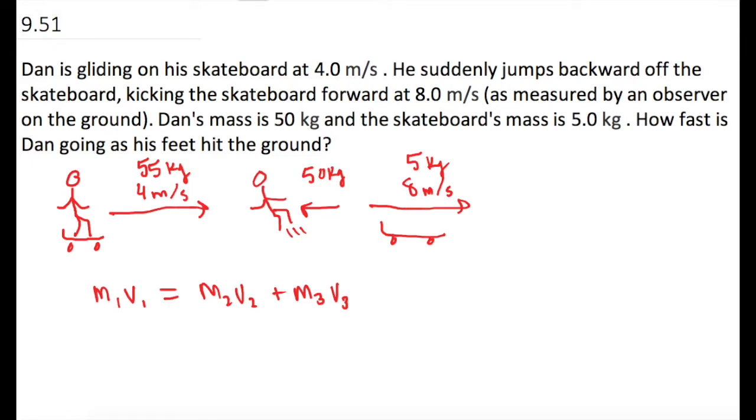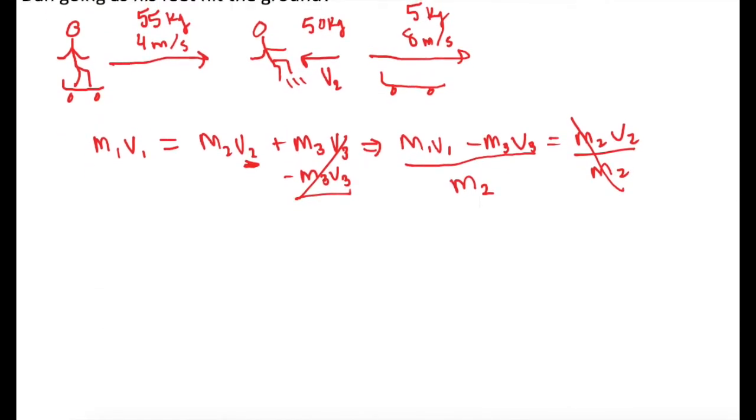And they tell us how fast is Dan going when he hits the ground. So we want this guy. So we want V2. So now let's go ahead and isolate V2. So we'll subtract over M3V3. So we have M1V1 minus M3V3 for the skateboard equals M2V2. Then we're going to divide both sides by M2. So now let's go ahead and rewrite that.